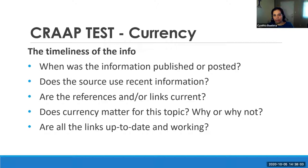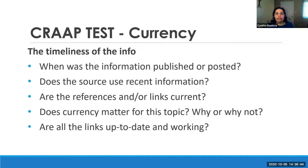The first letter in the acronym stands for Currency. With currency, you're going to determine if the information you found is timely and current — how long ago was it written. On a database, you can control that by limiting your search to maybe the last two years. But on a website, when doing a Google search, you don't always know if the information is current. Does the source have links that are current? Many times we find links that don't work, which might be a clue that the website is not up to date.